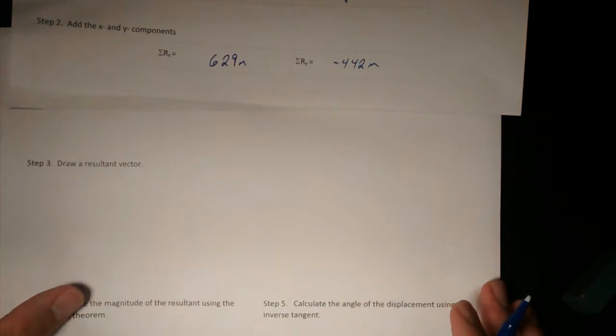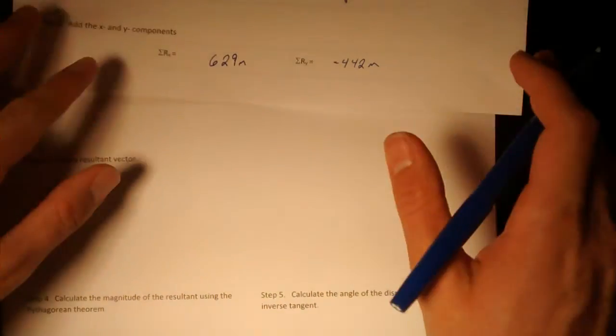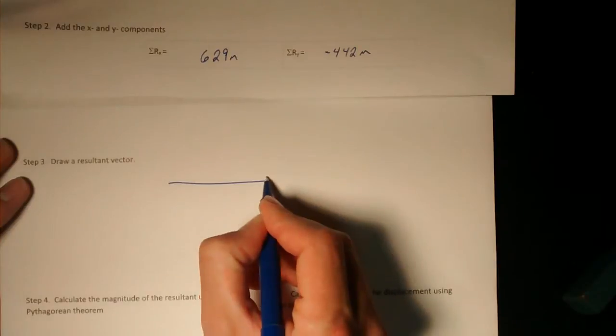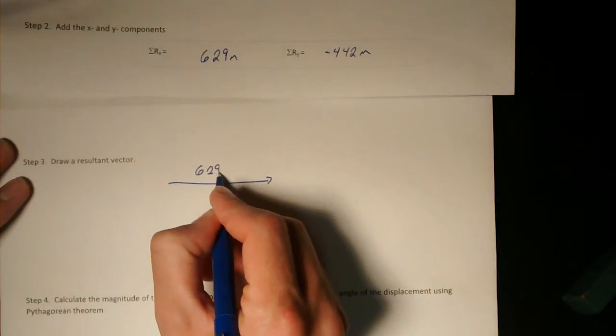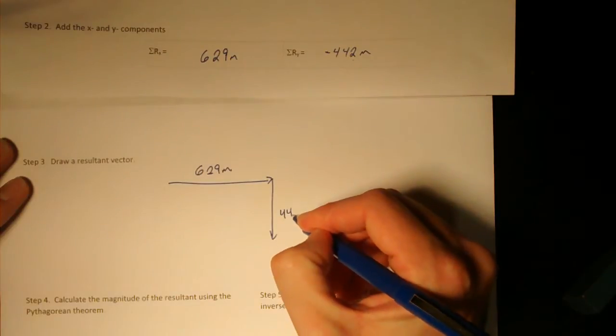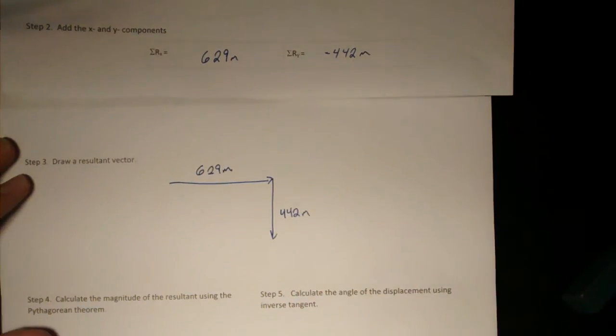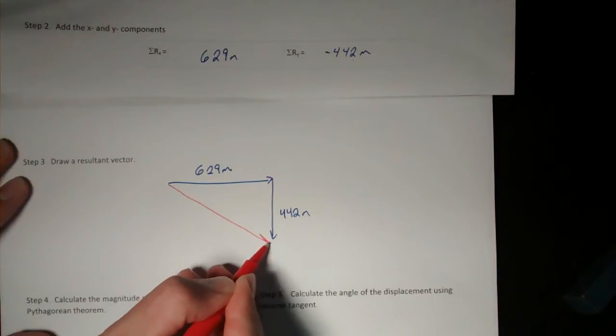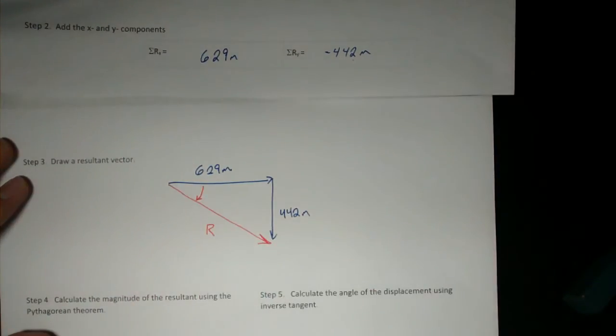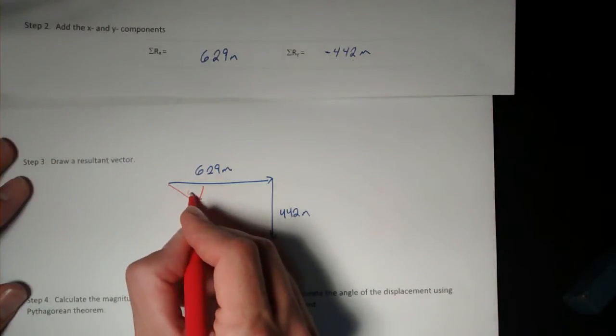So now I can sketch my resultant vector. I know that it goes 629 meters to the right. And then it goes down 442 meters. And so my goal is to determine this resultant here. So I'll have to find its magnitude and its direction, which will require me to find this angle.